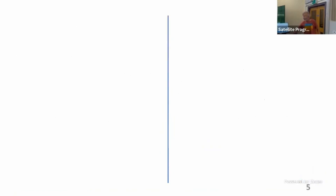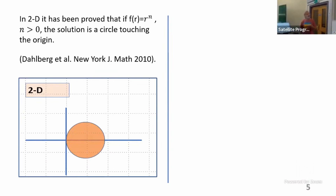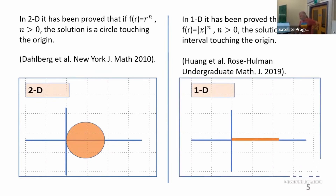The answers are not the obvious ones. There was work done in 2010 by Dahlberg and others, and he proved that if you have a density function r^n with n positive, the minimal solution is a circle that touches the origin — not, as you would perhaps initially expect, centred on the origin. In a Frank Morgan summer school, a group of undergraduates did the same work in 1D and came up with the equivalent solution.